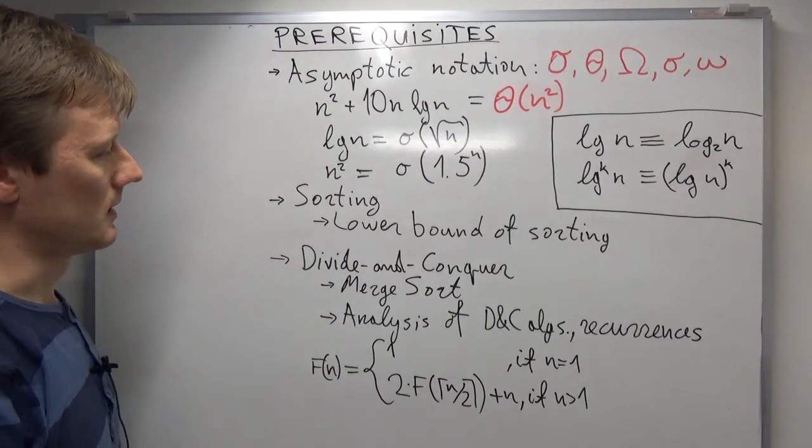Where, in particular, if we have an input of size larger than one, then the running time of merge sort is equal to two times the running time of merge sort on the input that is half as big as the original one plus n.